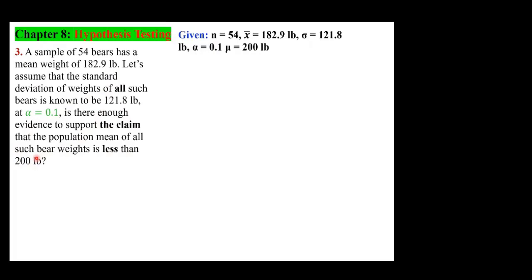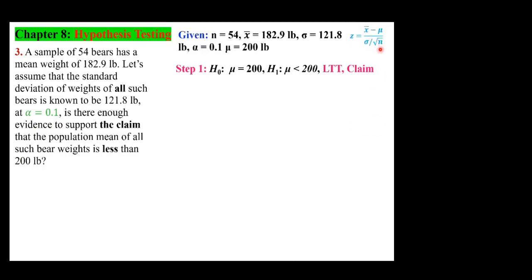Most of the time, alpha is chosen as 0.05 in practice. H₀: mu = 200. H₁: mu < 200 — this is a left-tail test and that is the claim. The test statistic is Z = (x-bar minus mu) over (sigma over square root of N). Plugging in everything gives a test statistic of negative 1.0317.